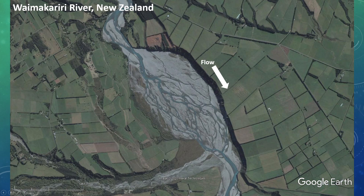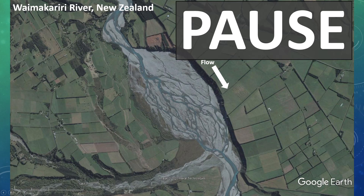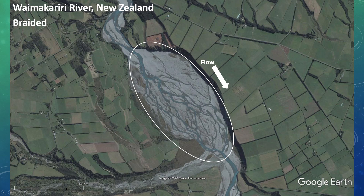Now let's move on to the Waimakariri River in New Zealand on the South Island. Did you guess braided? This one's pretty easy — this is a textbook example of a braided river. Notice the high density of channels and the magnitude of exposed sandy surfaces. These are all very classic indications that we're looking at a braided stream. Straight and meandering rivers are easily ruled out here, while anastomosing rivers are much more stable, whereas the extent of exposed sediment here suggests it's a highly dynamic system.